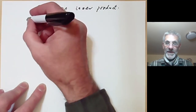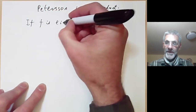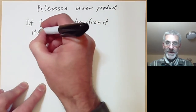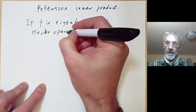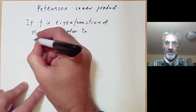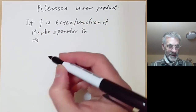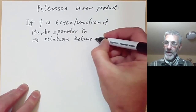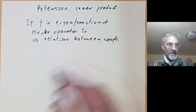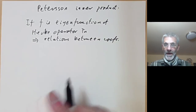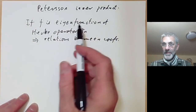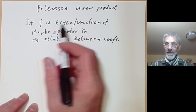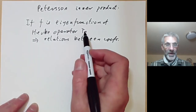We recall from the previous lecture that if f is an eigenfunction of the Hecke operators T_n, then this implies many interesting conditions. In particular, we get relations between the coefficients — for instance, the coefficients are multiplicative and so on. If the space of forms of weight k is one-dimensional, then it is obviously spanned by an eigenfunction of the Hecke operators T_n.